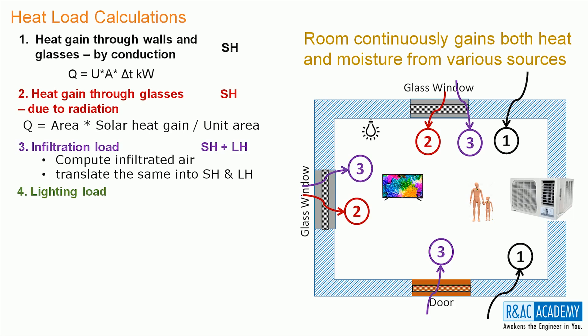The next is the lighting load. Lighting load is computed based on the type of lights and the number of lights. Lights add only sensible heat to the room and it depends on the type of light. For example, a 100 watt incandescent lamp adds 100 watts of heat to the room. A 40 watt tube light adds 50 watts of heat to the room. And a 50 watt LED lamp adds just 5 watts of heat to the room. This is the reason why the commercial complexes are using LED lamps predominantly these days.